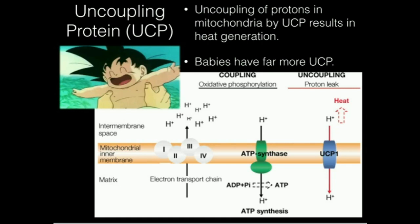So remember: babies can't shiver, so they make a lot of this uncoupling protein to uncouple the proton gradient, and it does not couple the proton leakage to ATP synthesis. That's what generates heat.